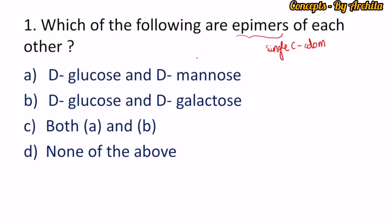For example, D-glucose and D-mannose are epimers with respect to carbon number 2, and glucose and D-galactose are epimers of each other with respect to carbon number 4. So here, options A and B both are correct — the correct option is both A and B.